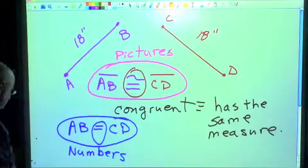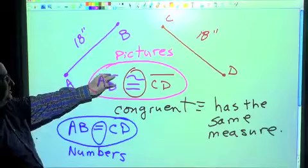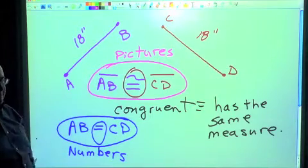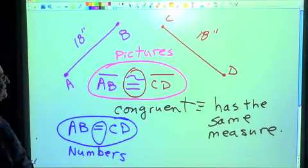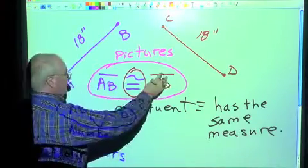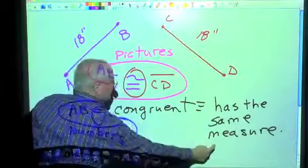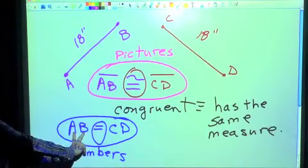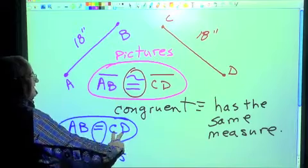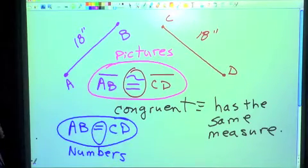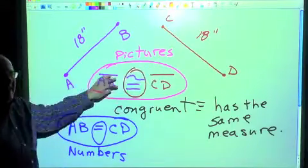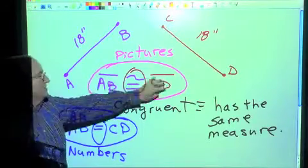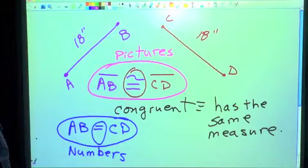The notation with the bar represents pictures — geometric figures. Pictures cannot be equal; they can be congruent. When we write AB with the bar, we're talking about the picture of a line segment. When we write AB without the bar, we're talking about a number — the measure. This picture is congruent to that picture because this number is the same as that number.